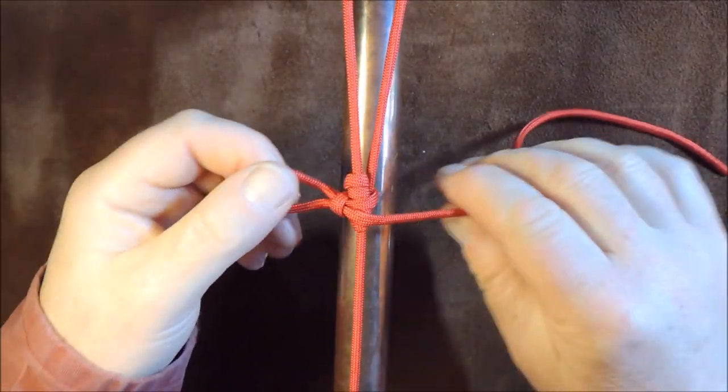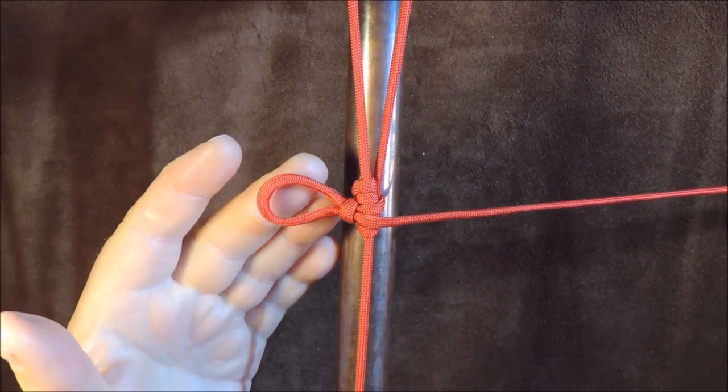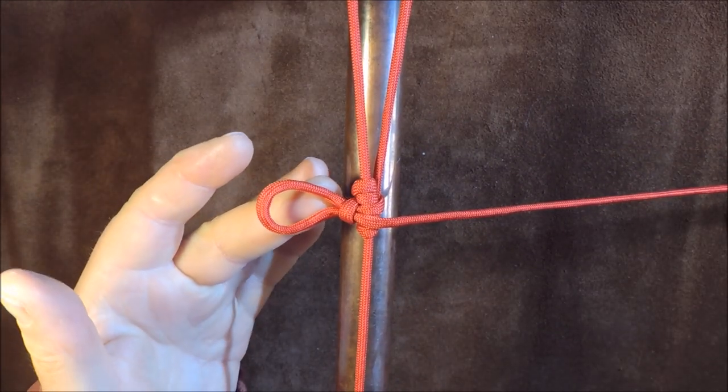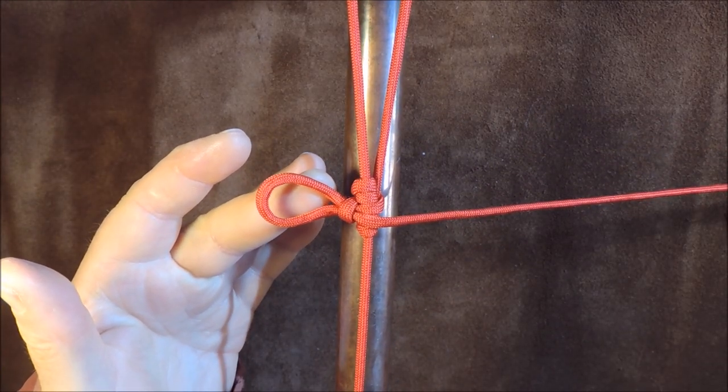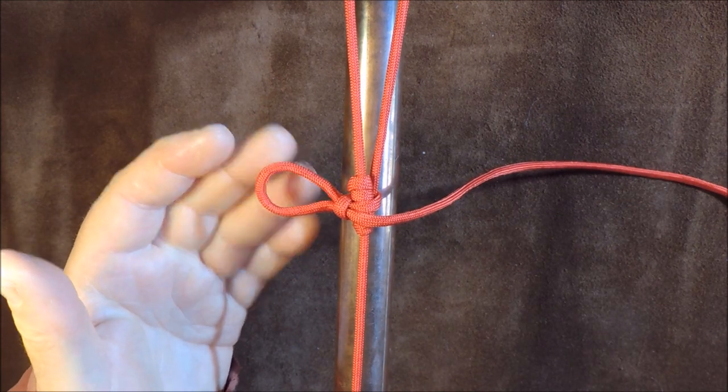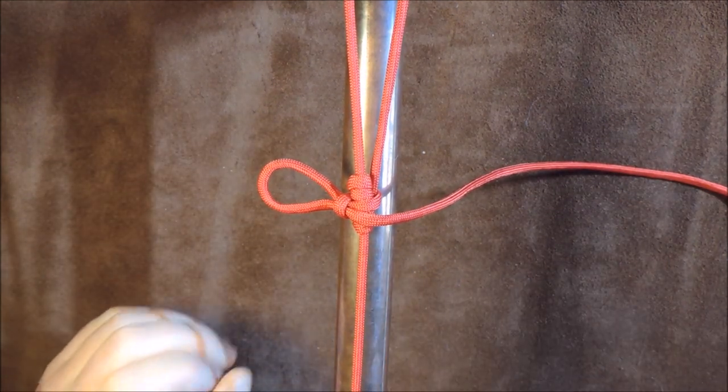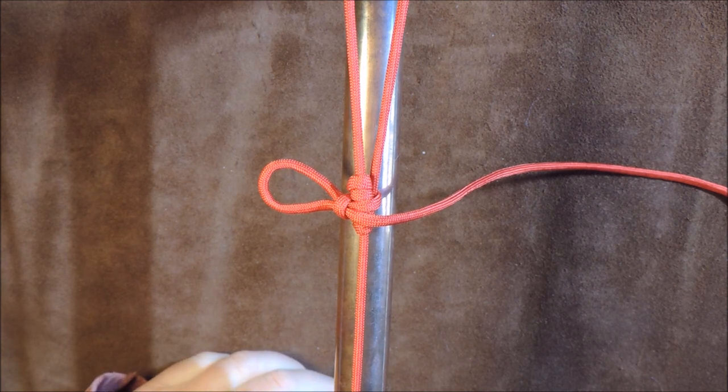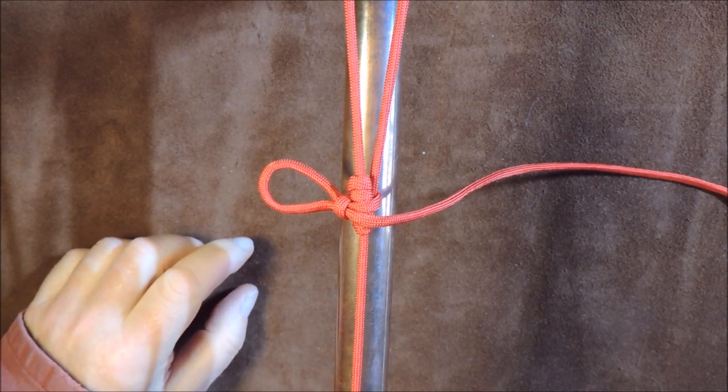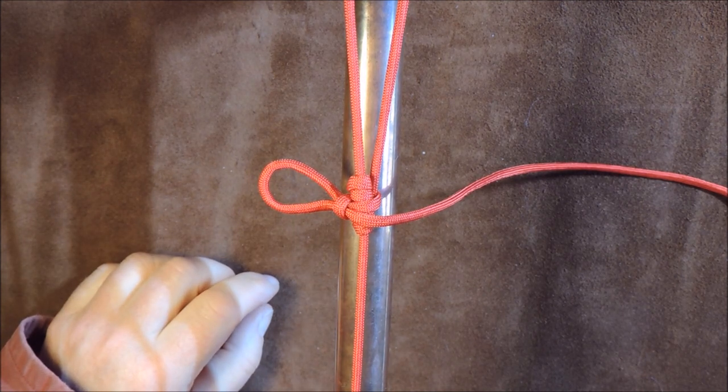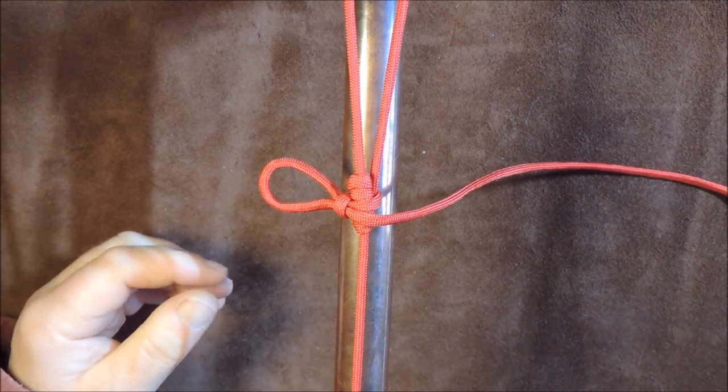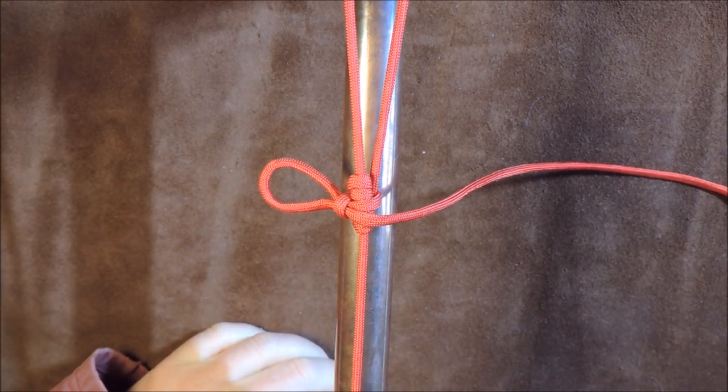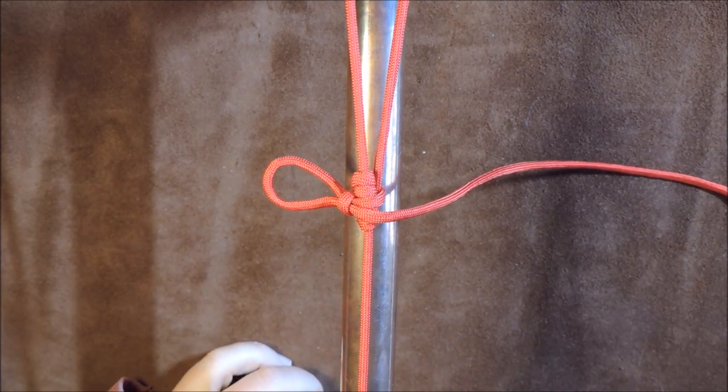It's allowing it to loosen off, and this is the quick release version where I've got just a quick loop here to release it. The other thing about this knot is it's a great knot for, say, washing lines, if you're camping setting up a ridge line for your tarpaulin, for guy ropes, etc. It's so easy and simple to tie.